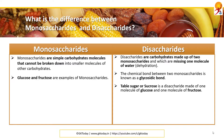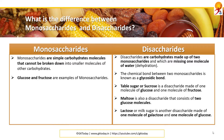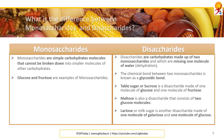Table sugar or sucrose is a disaccharide made of one molecule of glucose and one molecule of fructose. Similarly, maltose is also a disaccharide which consists of two glucose molecules, whereas lactose or milk sugar is another disaccharide made of one molecule of galactose and one molecule of glucose.